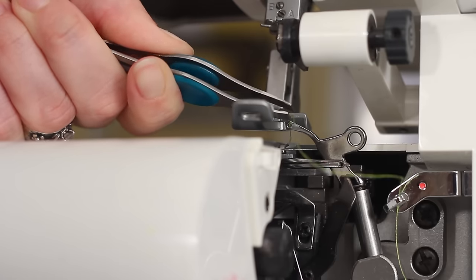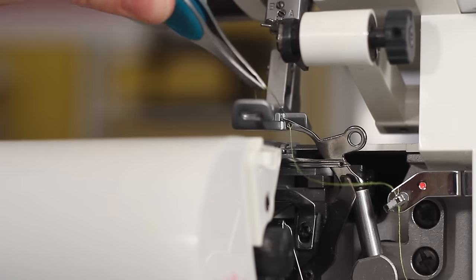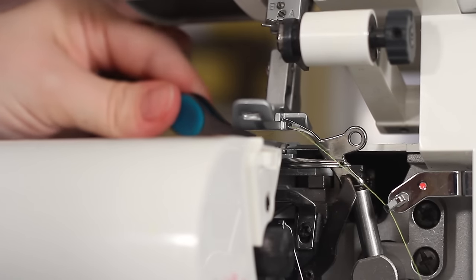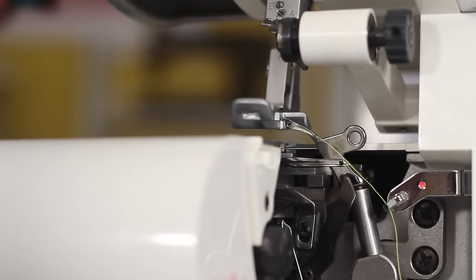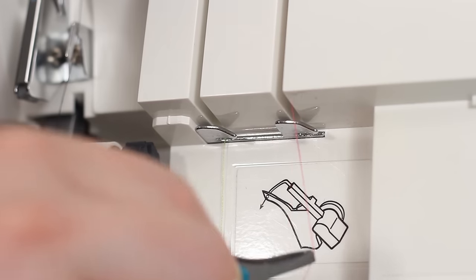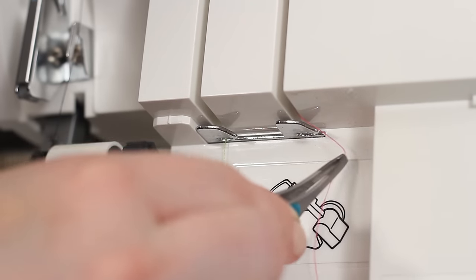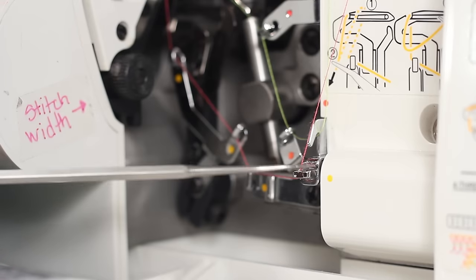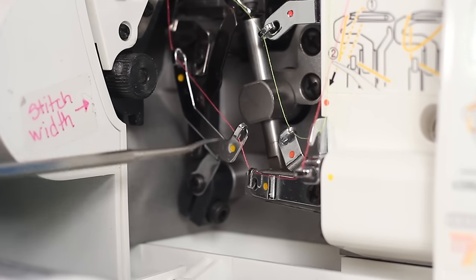Now let me show you again from a better angle. So now the upper looper is threaded. Time to move on to our lower looper. Again, pass the lower looper thread, which is our hot pink thread, behind the metal hook. Then follow the yellow dots, just like we did before.